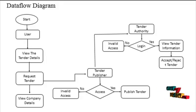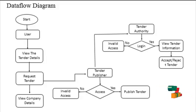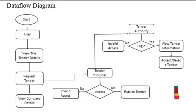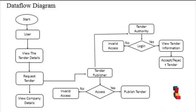In the User model, the user can view the tender details. If a user wants any tender and makes a request, then this request information will directly go to the tender publisher. The tender publisher then accepts or rejects the tender, and this acceptance or rejection result is directly sent to the user's mail ID.